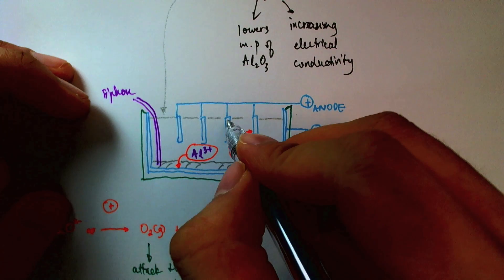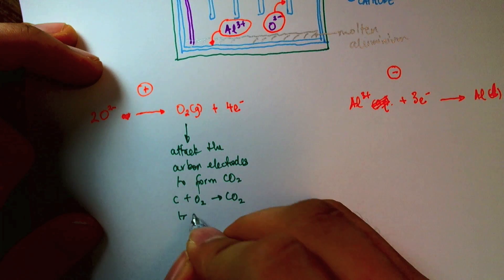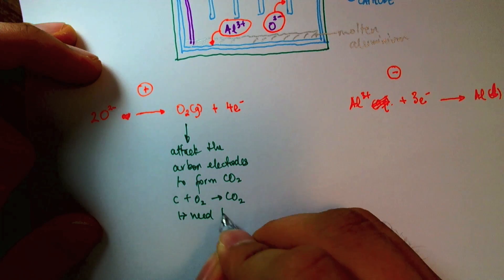So as time goes on, these electrodes will start wearing away and they need to be replaced. So we need to replace the carbon electrodes from time to time.